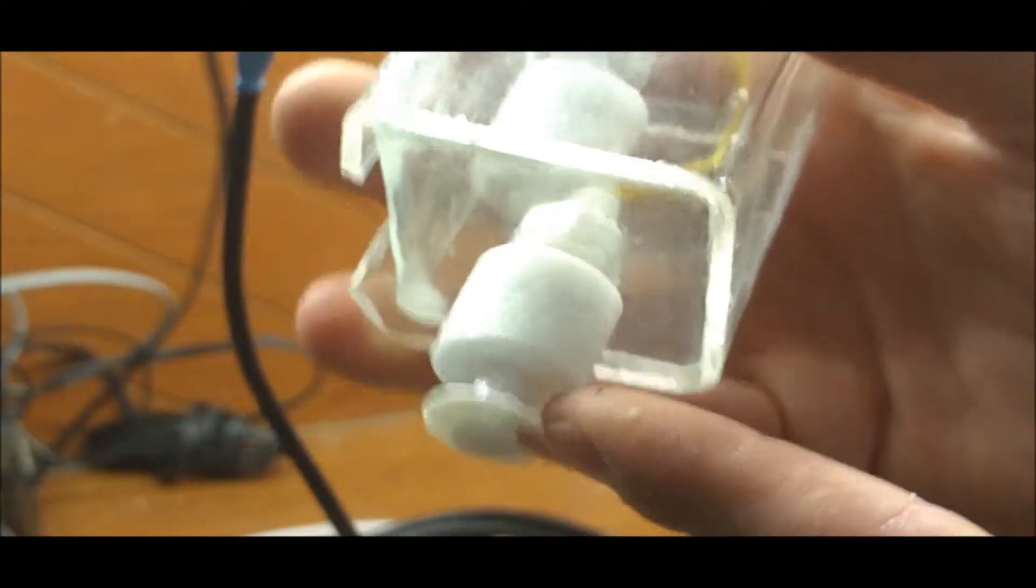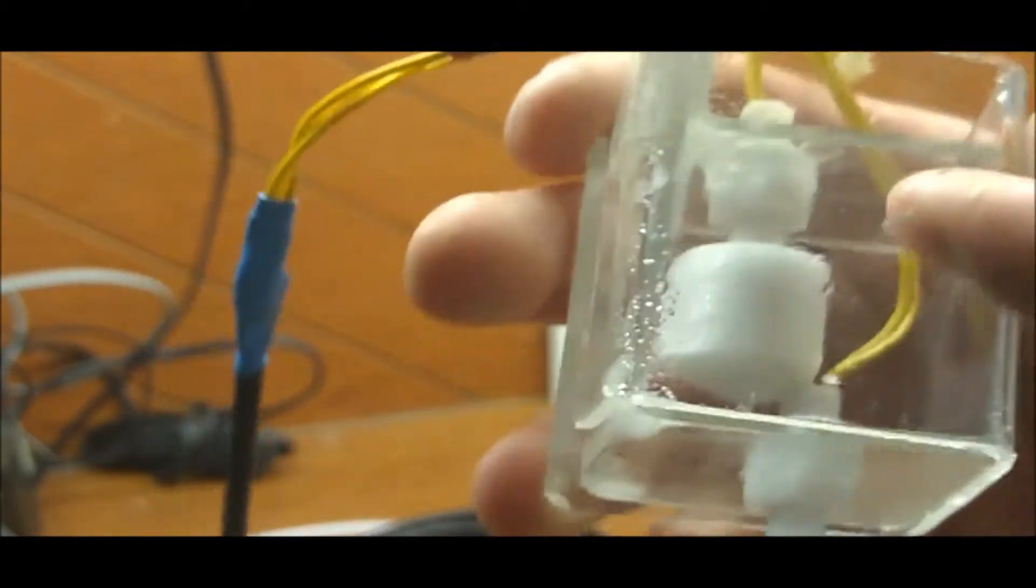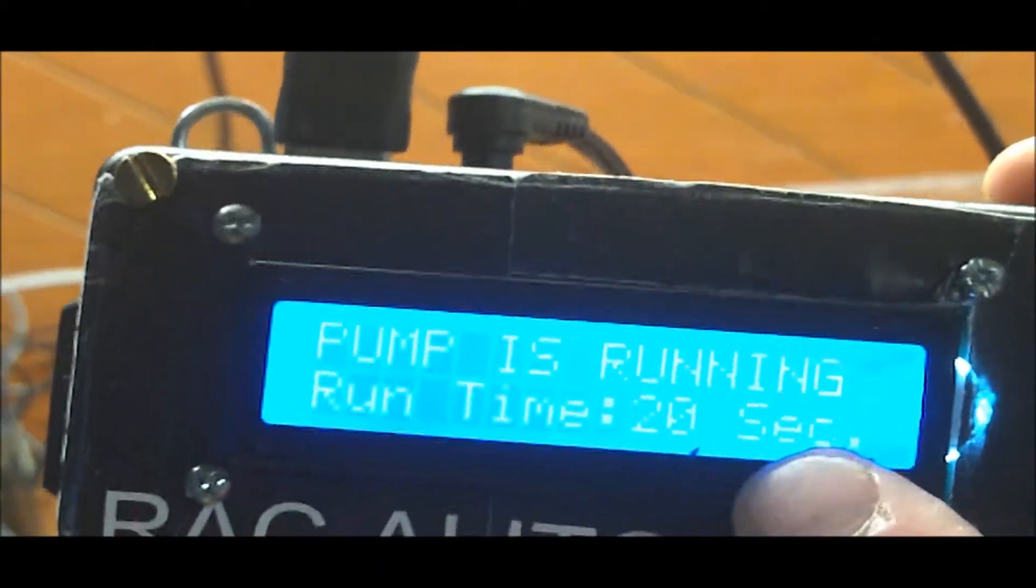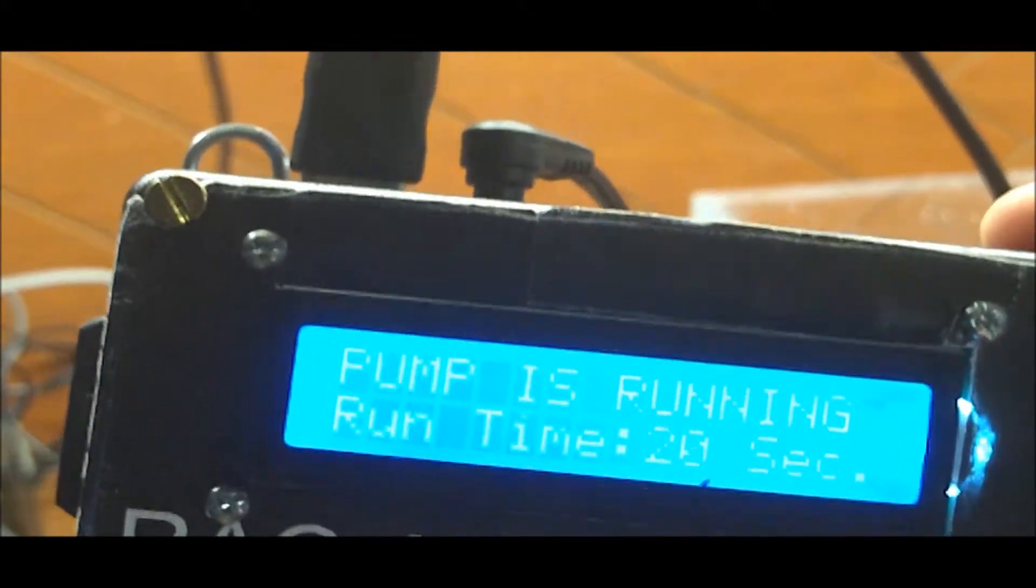So, the way I have it set up is this float here is S1 and this float here is S2. So this is what it looks like when it's running. It says pump is running. Runtime is 20 seconds. That let me know how long it's selected to run.